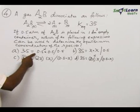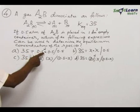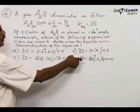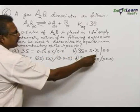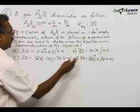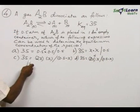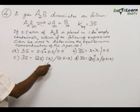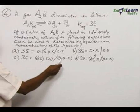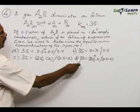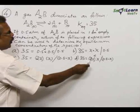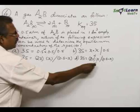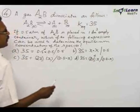The options are: A) 35 equals 0.5 squared into 0.5 divided by 0.5, B) 35 equals x into x divided by 0.5, C) 35 equals 2x multiplied by x divided by 0.5 minus x, and D) 35 equals 2x the whole square, then multiplied by x divided by 0.5 minus x.